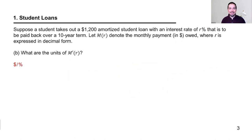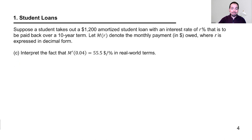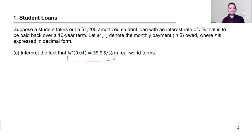Here's my polished written solution. Now here's where we really start getting into the calculus. If you take out a $1,200 amortized student loan at an interest rate of 4%, assume a 10-year term, and work out the monthly payments, you get some number.